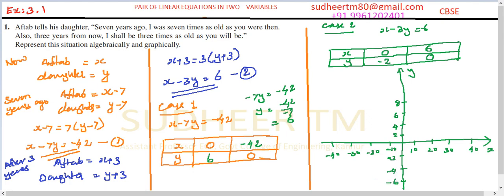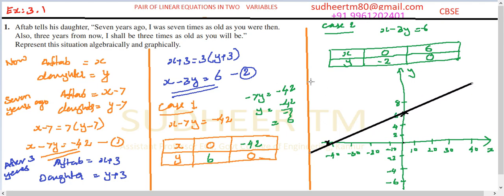Representing the points on the coordinate system: for case one, plot (0, 6) — X value 0, Y value 6 — and (−42, 0), which is somewhere to the left on the X axis. Join these two points to get the line representing X minus 7Y equals minus 42.